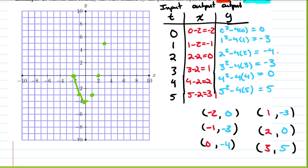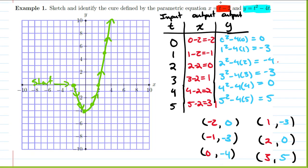Playing connect the dots, our graph looks like a parabola. With parametric equations we get more information — we started at t equals zero, which was our starting value, and we moved along the graph in a specific direction. Traditional y versus x graphs don't have a direction associated with them. That is the graph of the curve x equals t minus 2 and y equals t squared minus 4t.